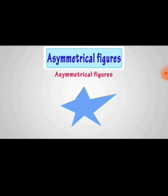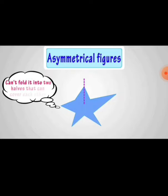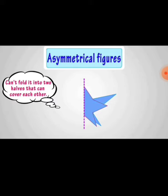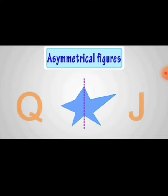A figure can have more than one line of symmetry, called multiple line of symmetry. We cannot fold it into two halves that cover each other if it does not have the same size and same shape. So this is an example of asymmetrical figures.